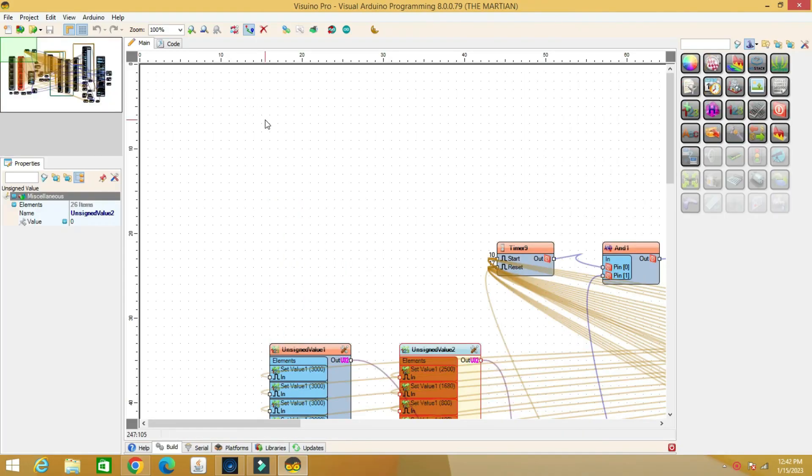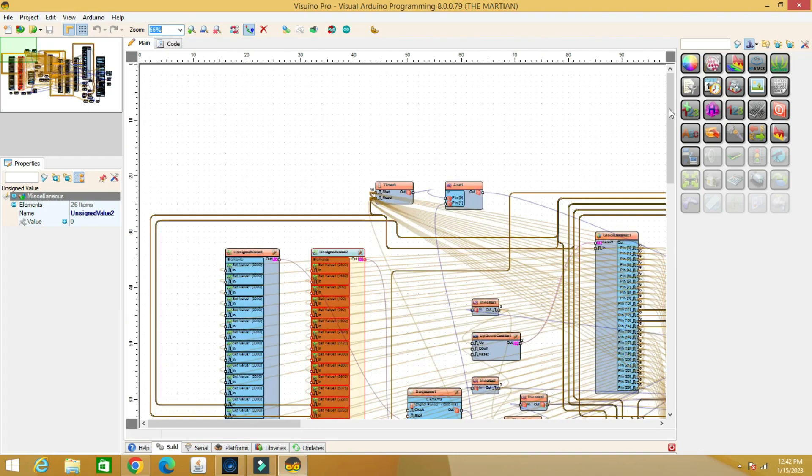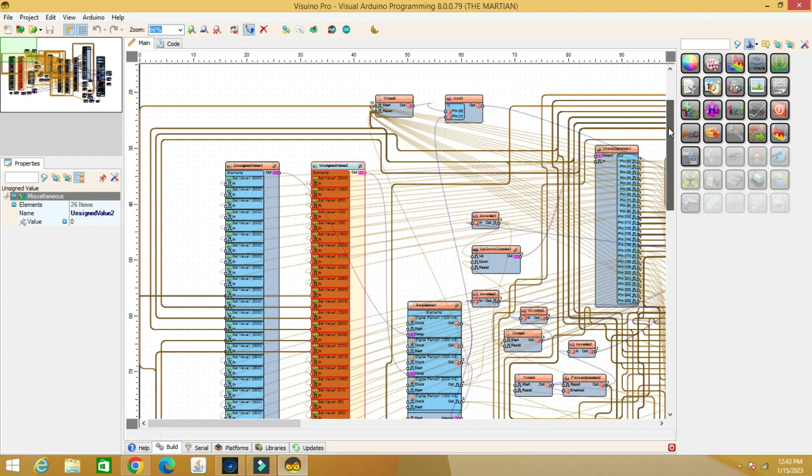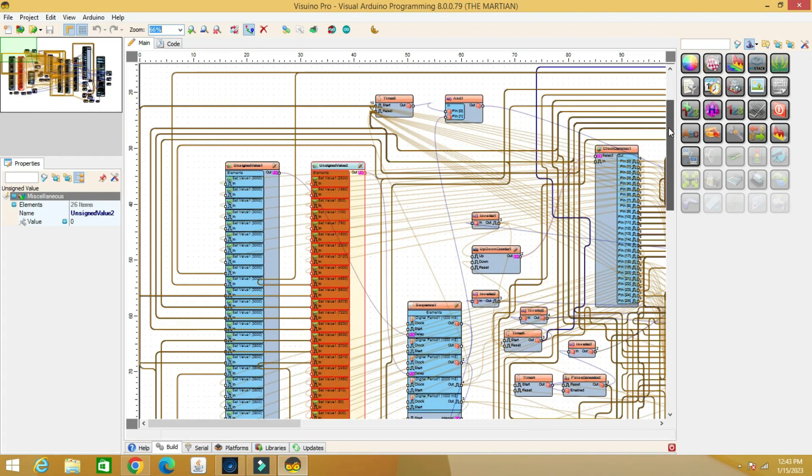We open Visuino, load the code. We can see the 26 characters of the alphabet inside the code.